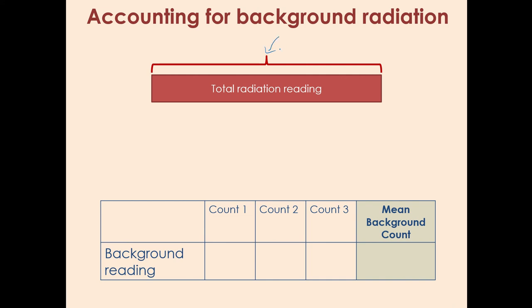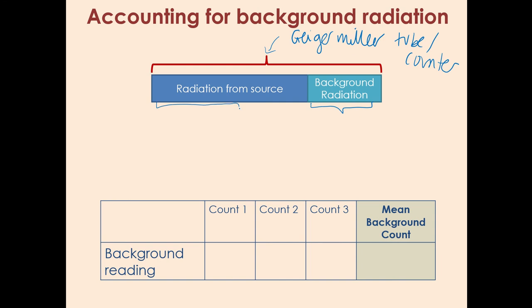What we want to be able to do is get the count rate from the source that we are looking at. But the total radiation reading that's picked up by the Geiger-Muller tube and the counter that we've just shown on the previous slide, that's going to include two bits: the background radiation and the radiation from the source. So what we need to do first is explain that you need to get a reading for the background radiation, and then once you've got your total reading you have to subtract that to get the radiation that's actually from the source, which is what we are interested in.